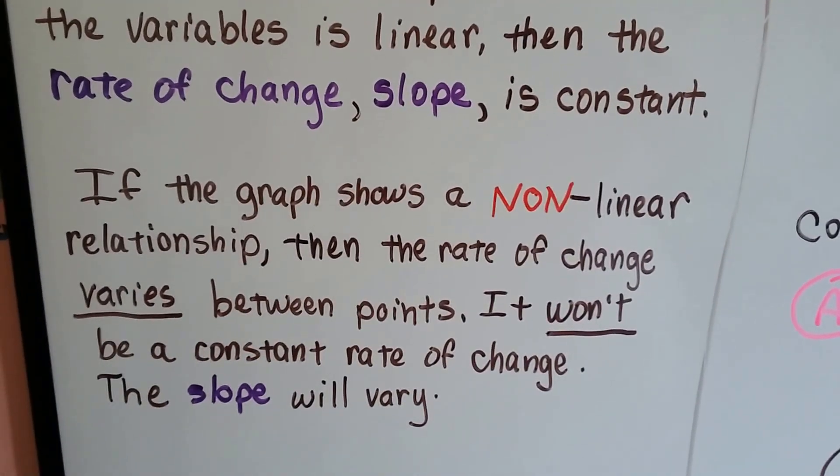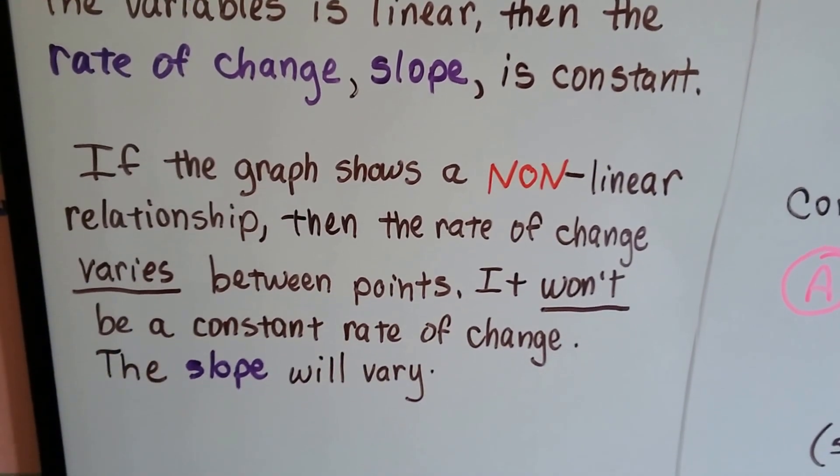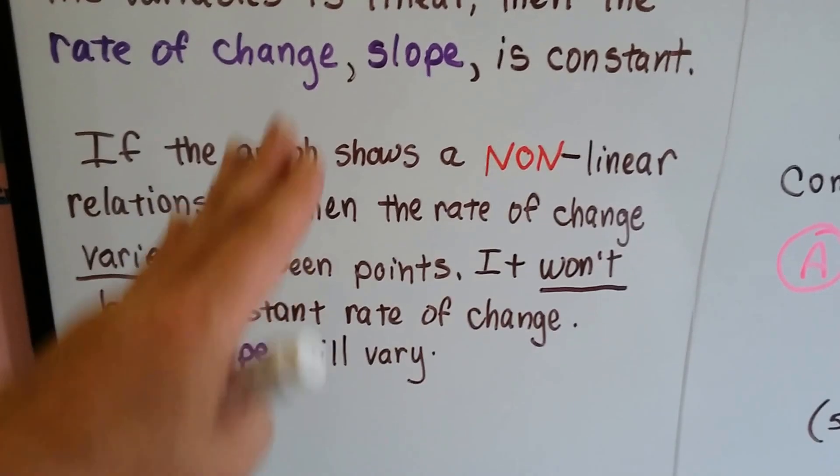If the graph shows a nonlinear relationship, then the rate of change varies between the points. It won't be a constant rate of change, and the slope will vary. It might even curve.